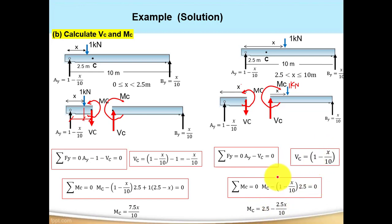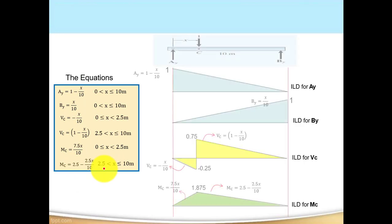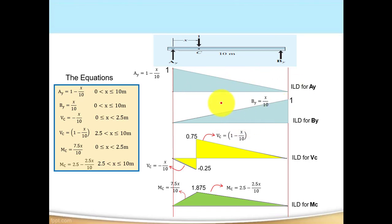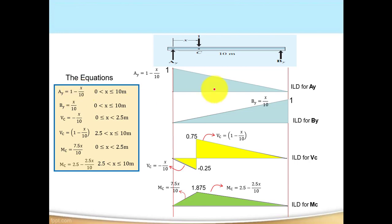Vc and Mc for the right segment are valid for 2.5 ≤ X ≤ 10. Now let us collect all equations for reaction, shear, and moment and draw the influence line diagrams. For Ay: the formula is Ay = 1 − X/10. At X = 0, Ay = 1 (maximum value); at X = 10, Ay = 0 (minimum value). This gives a straight line from 1 to 0.